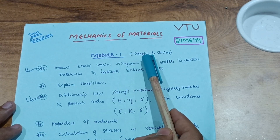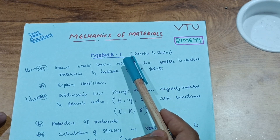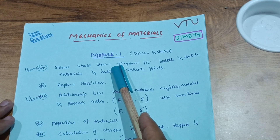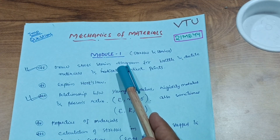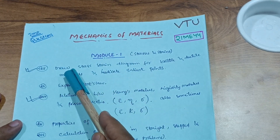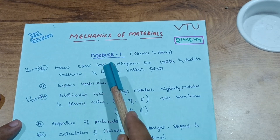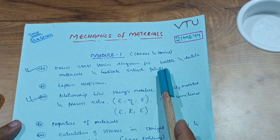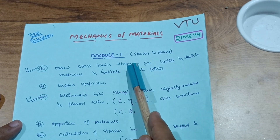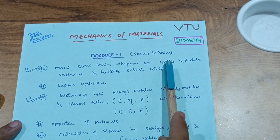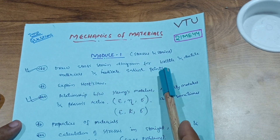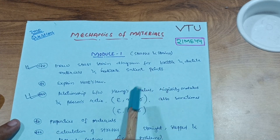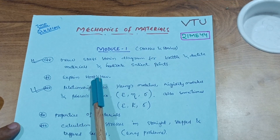In Module 1, the chapter name is Stresses and Strengths. If you have already come across the P-cycle, you have definitely encountered these types of definitions — stress-strain diagrams and properties of materials. Just recall your Engineering Physics subject, as you have already covered these topics. The most important question in MOM is: draw the stress-strain diagram for brittle and ductile materials and indicate salient points.